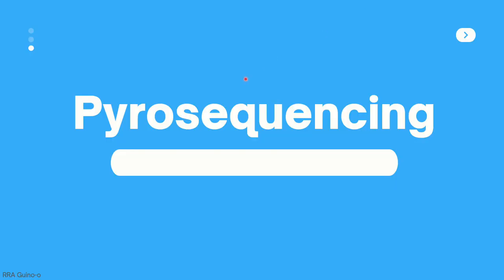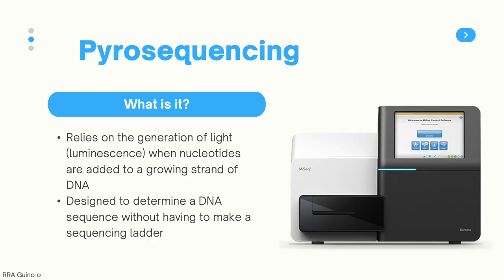Next, we'll talk about indirect methods for sequencing DNA. The first is pyrosequencing. Unlike direct sequencing methods which directly show bands corresponding to different nucleotides, pyrosequencing relies on the generation of light through luminescence whenever nucleotides are added to a growing strand of DNA. This is designed to determine a DNA sequence without having to make a sequencing ladder. One of the common machines used is by Illumina, so pyrosequencing is also called Illumina sequencing.